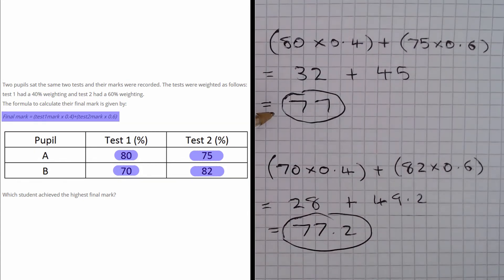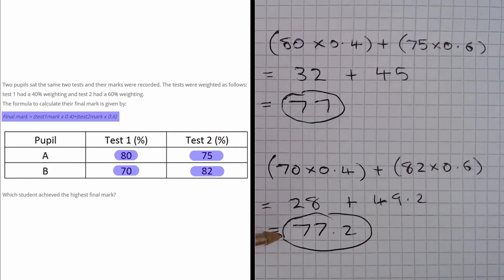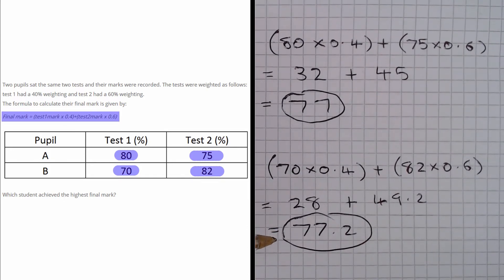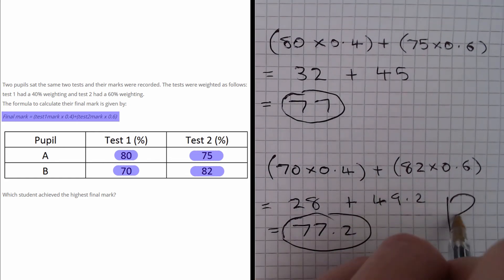Pupil A had a final mark of 77 and pupil B had a final mark of 77.2. The question asks which student achieved the highest final mark, so we can see that this was pupil B, which is our answer.